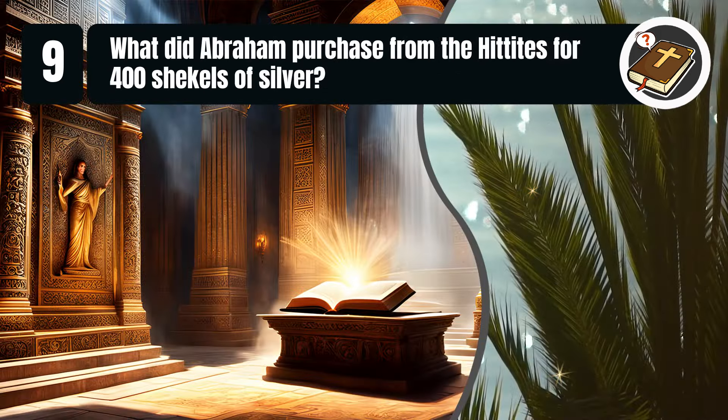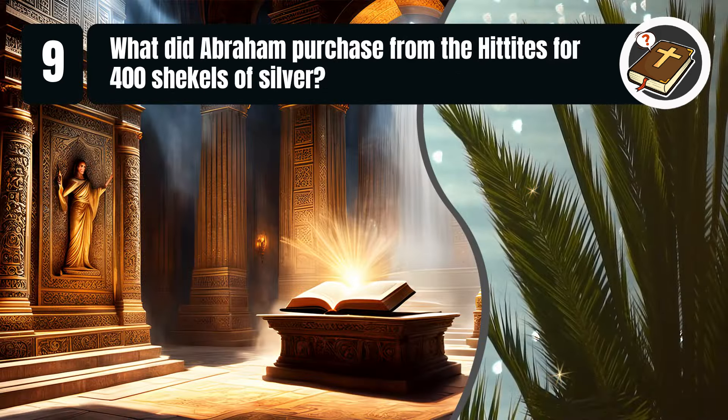Question 9. What did Abraham purchase from the Hittites for 400 shekels of silver? A. City. B. Burial plot. C. Lake. D. House. You get 10 seconds.